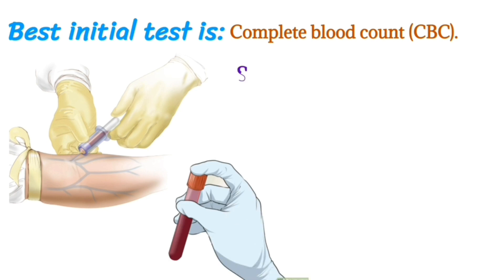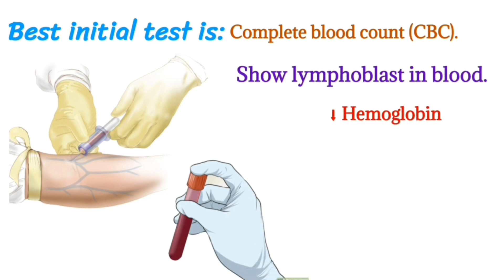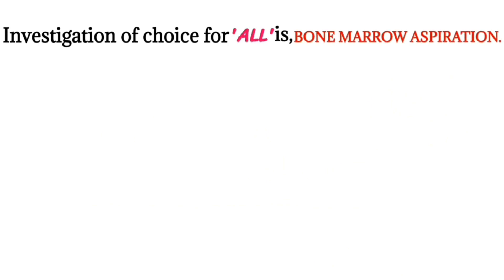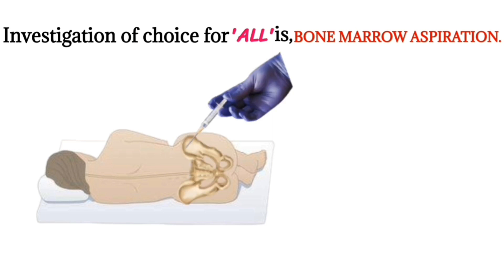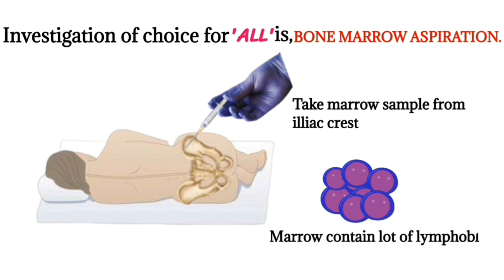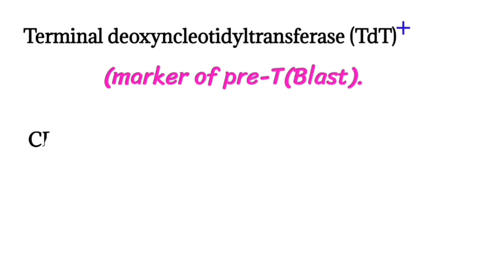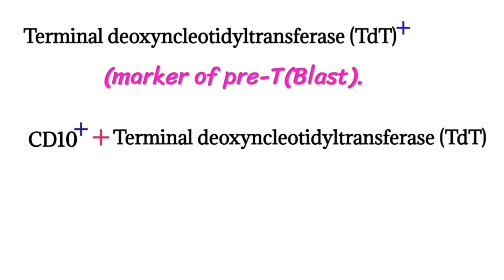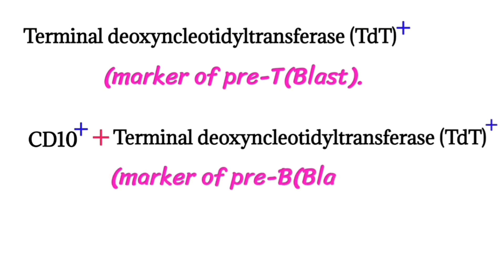Diagnosis of acute lymphoid leukemia: the best initial test is a complete blood count (CBC), which shows lymphoblasts in the blood, decreased hemoglobin, decreased platelets, and increased white blood cells. The investigation of choice is bone marrow aspiration, where a marrow sample is taken from the iliac crest and shows numerous lymphoblasts. Terminal deoxynucleotidyl transferase (TDT) is a marker of pre-T cells, and CD10-positive TDT-positive is the marker for pre-B blasts.